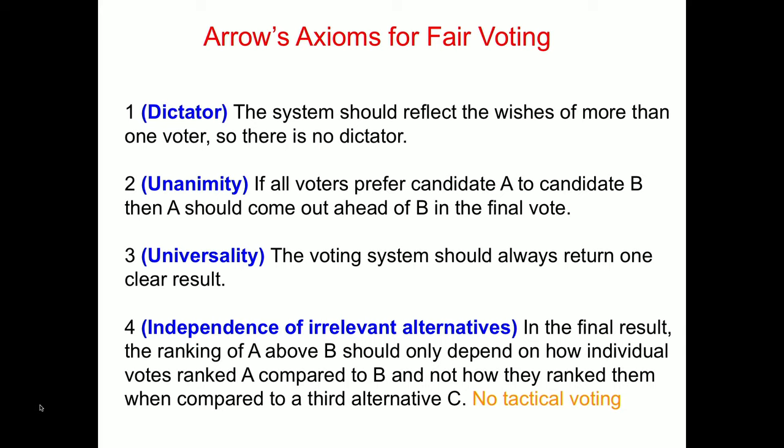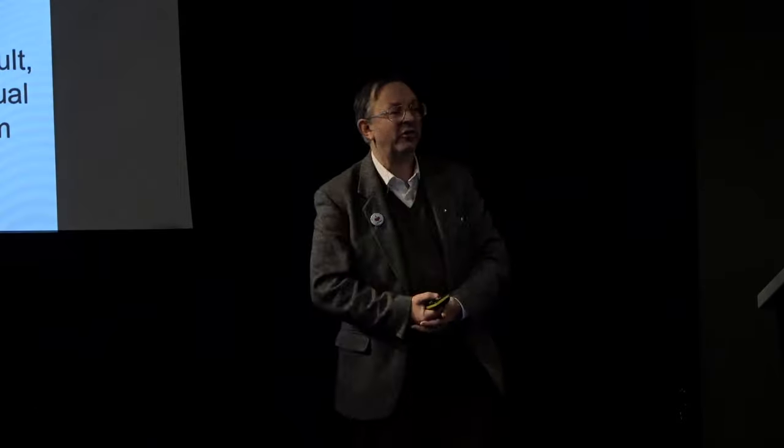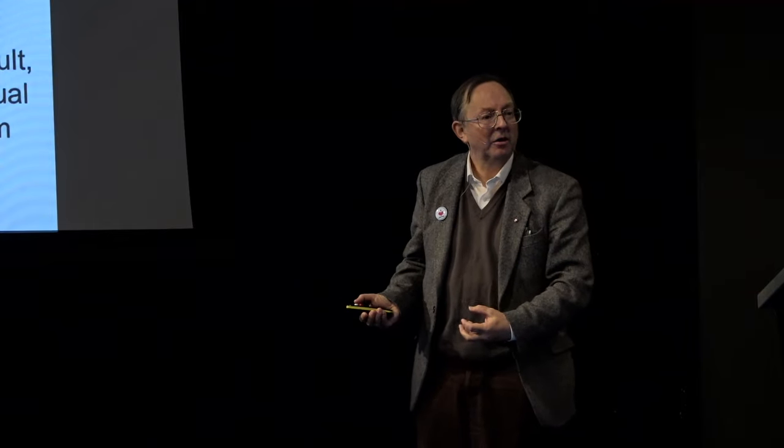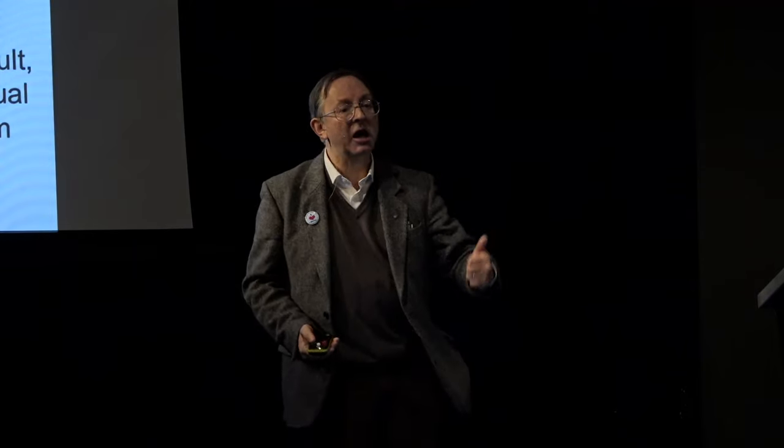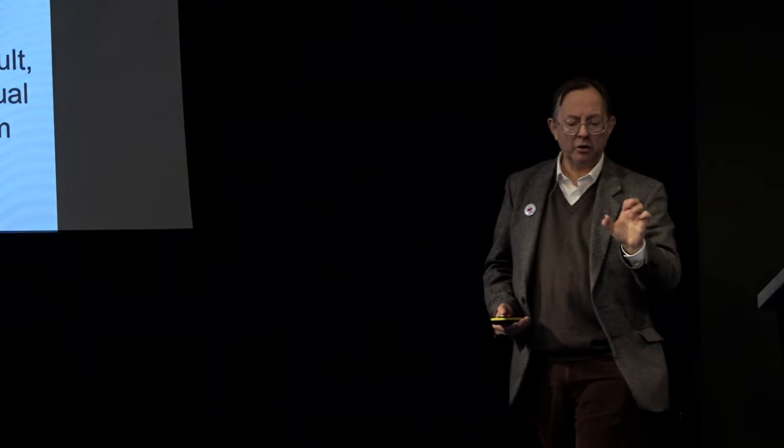Thirdly, universality: you want your voting system to produce a result. And finally, the independence of irrelevant alternatives — which I'll call 'no tactical voting' — meaning that if candidate A is preferred to candidate B by the voters, any third candidate C should not affect whether A comes ahead of B. So by changing to C, you don't change A over B. Those are Arrow's four axioms.